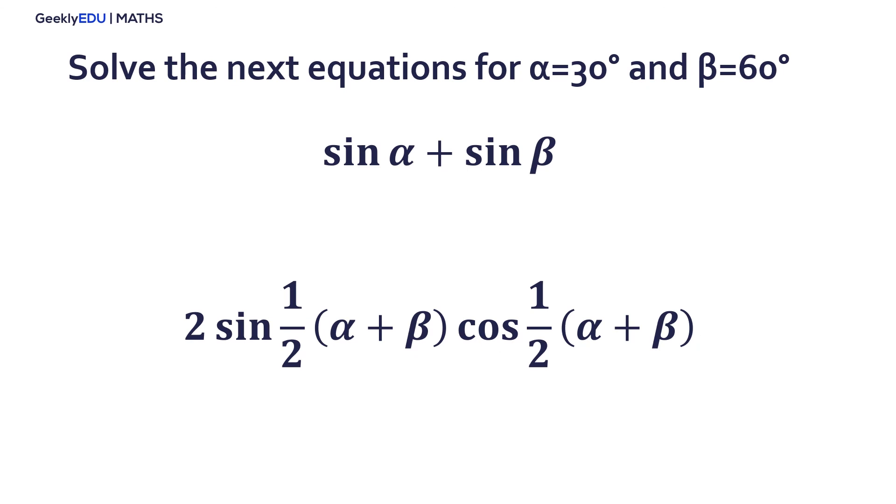This is a bonus for you. Solve the next equation when alpha is equal to 30 degrees and beta is equal to 60 degrees. And then, tell us what you find out about these two equations and write it in the comments below. So, thanks for watching and see you later guys.